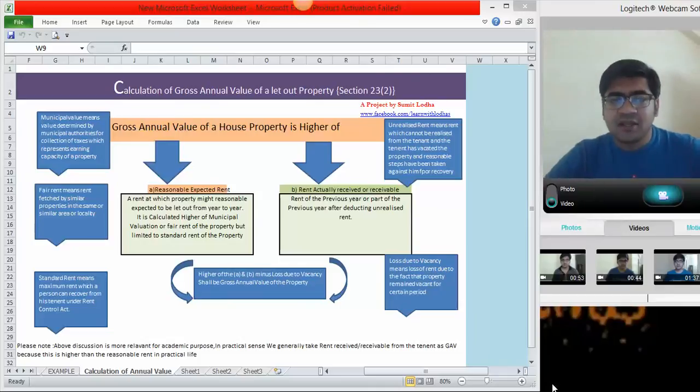As you all are aware that under house property head, income is taxable on the basis of gross annual value of a house property. So, let us understand first how to calculate this gross annual value.